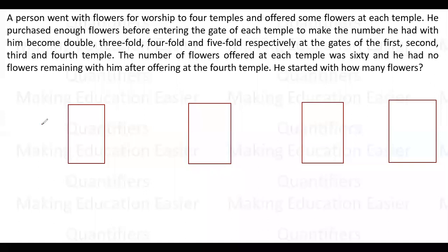Whatever he had here, he doubled it here. Whatever he had here, he tripled that here. Here it was four times, and here it was five times.